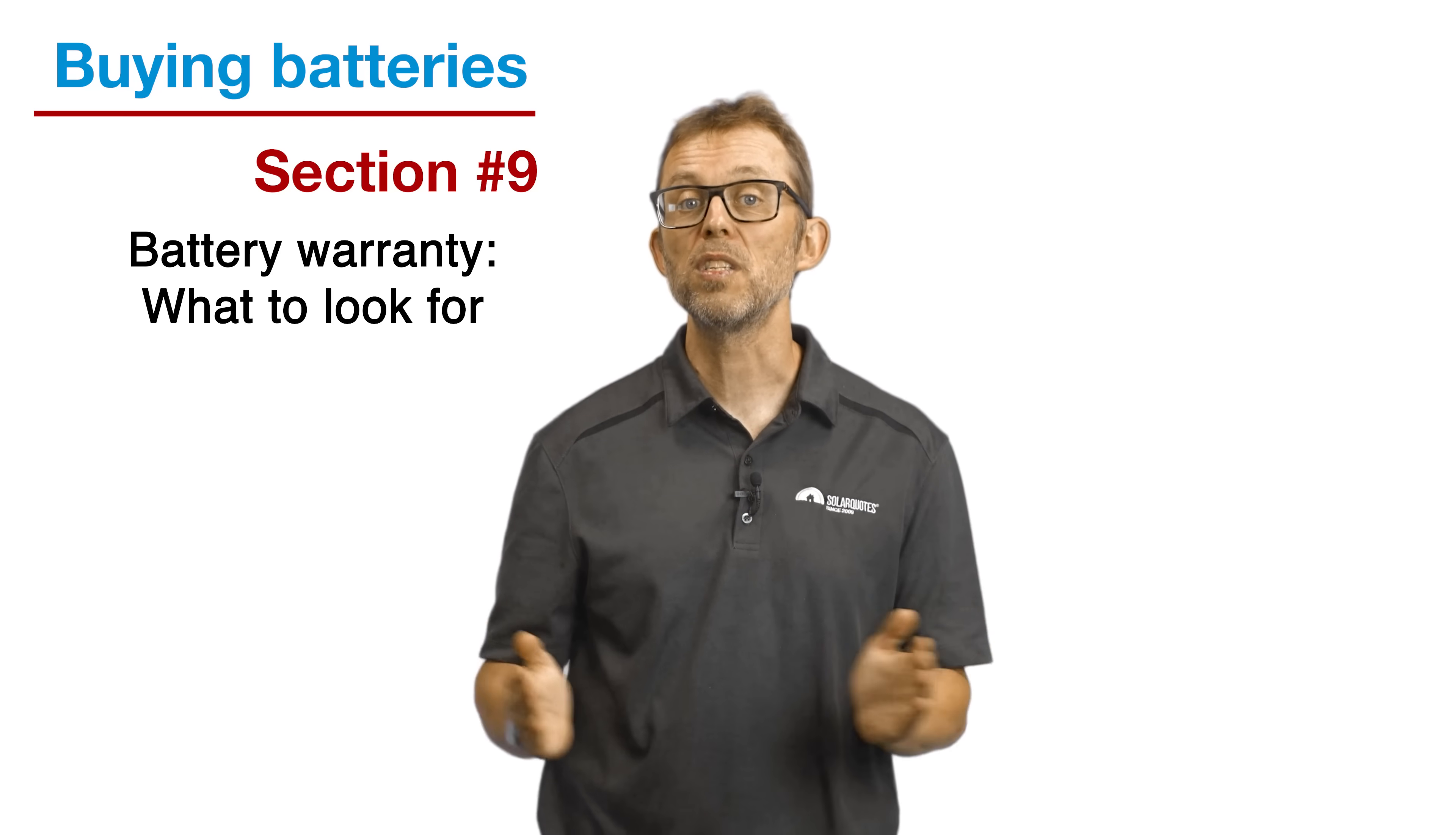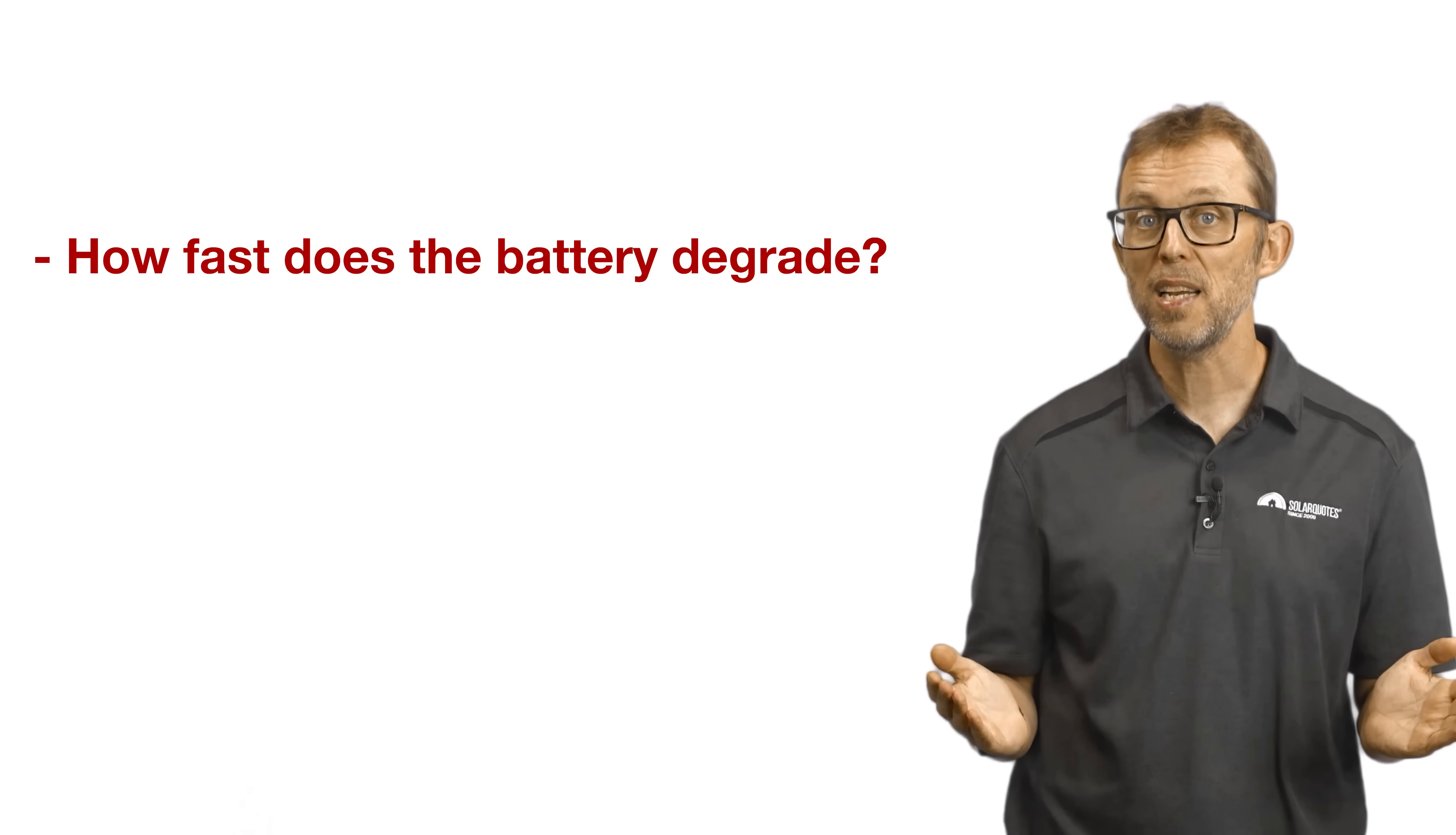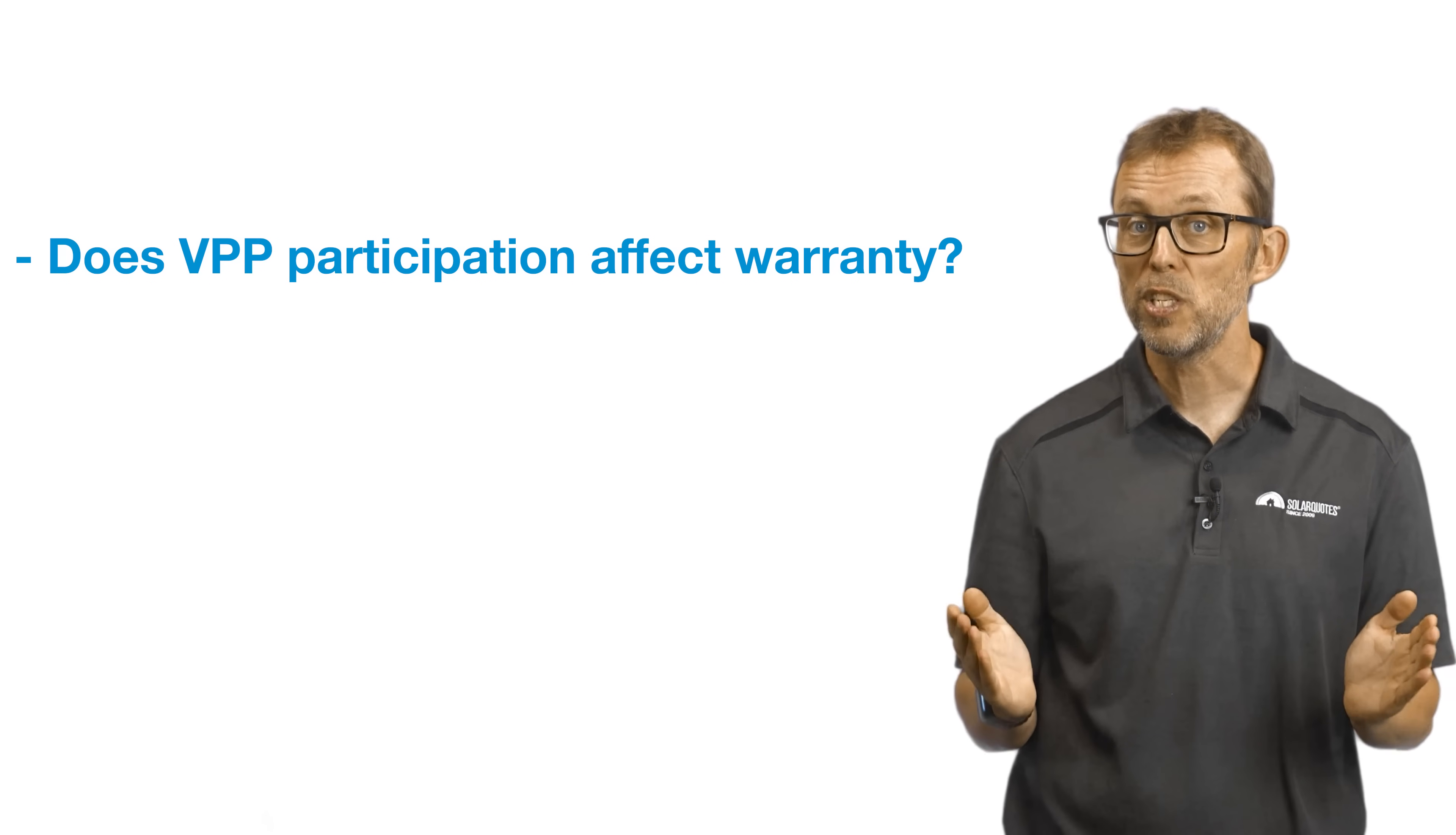Point nine, battery warranties. What to look for? Reading battery warranties can be tedious. I know because I've read a bunch. Here are the key points to understand about any battery you're thinking of buying. First up, battery degradation. What capacity does the battery have at the end of its warranty? 60% after 10 years is a typical amount. Also ask, is your warranty the same if you're part of a VPP? Joining a VPP can reduce what your warranty covers.